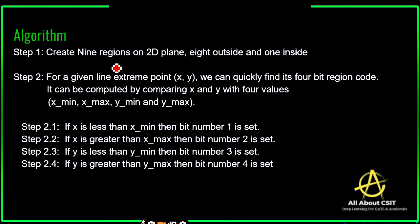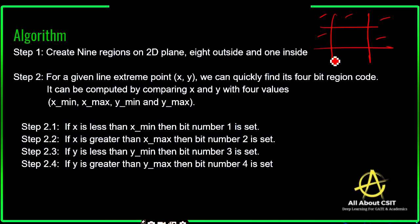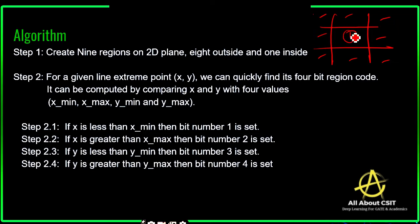For a given line extreme point (X, Y), we can quickly find its four-bit region code. A four-bit region code will be present for each region. We compare X minimum, X maximum, Y minimum, and Y maximum. Based on these, region codes are found: if X is less than X minimum, then bit one is set; if X is greater than X maximum, then bit two is set; if Y is less than Y minimum, then bit three is set; and if Y is greater than Y maximum, then bit four is set.